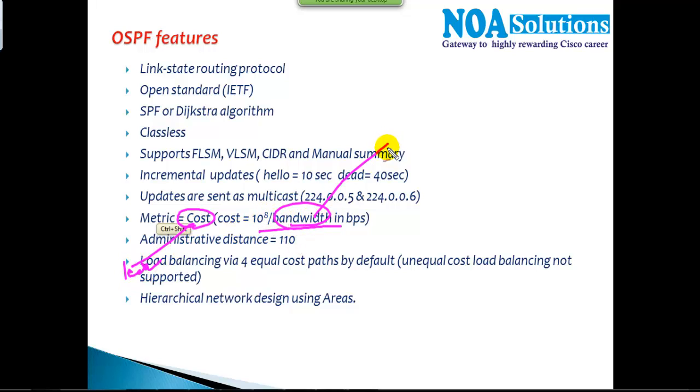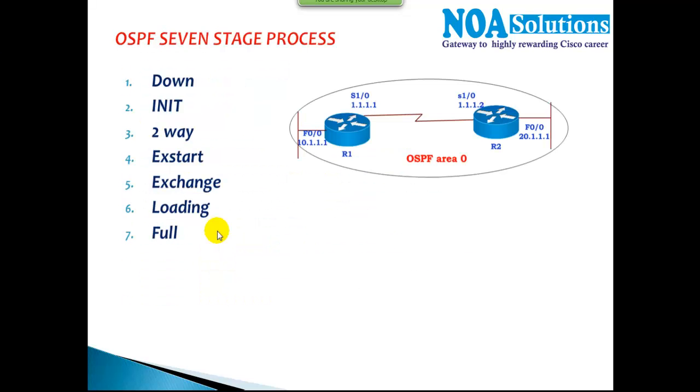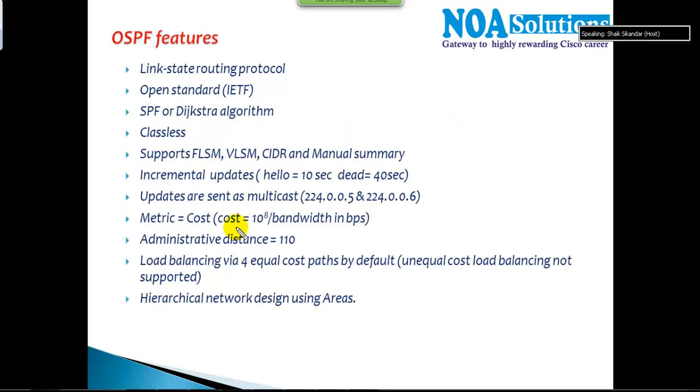Administrative distance is 110—that's the administrative distance for OSPF. In EIGRP it is 90, and in RIP it's 120. These are the default administrative distance values. This is something standardized, but we can change it.